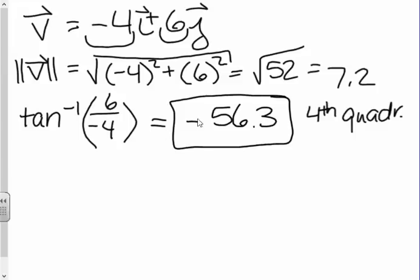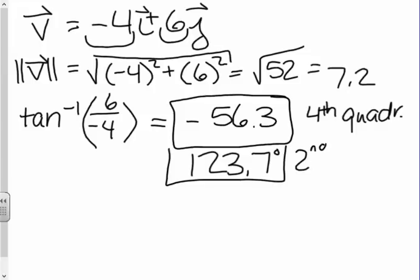So what we need to do is remember that tangent can work with plus or minus 180 degrees. So I'm going to add 180 degrees to this to get something in the second quadrant, and I get 123.7 degrees, which turns out to be in the second quadrant, which is good. This is the value I want, not that one.